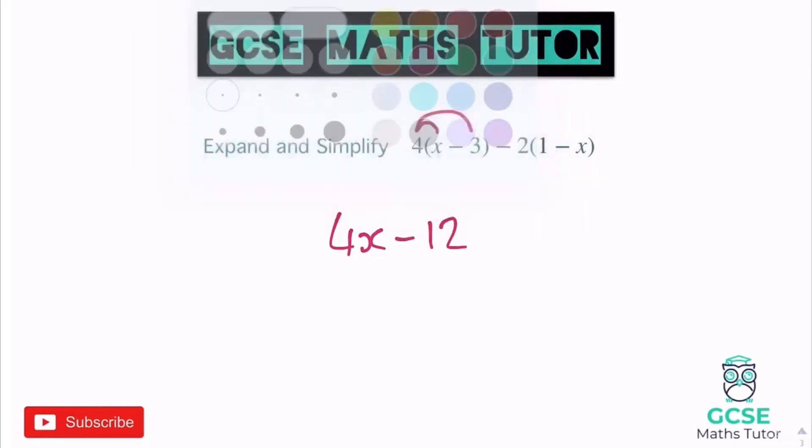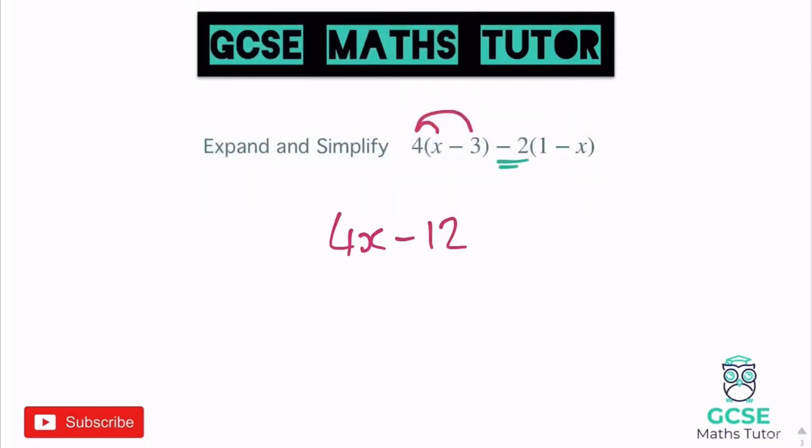Moving on to the next bracket but again just being careful because we've got a negative two at the start. This time it's negative two times the number first. Negative two times one is negative two so take away two. And then we've got negative two multiplied by negative x. So the negatives are going to become positives because we've got a negative multiplied by another negative. So we've definitely got positive. And that's two times the x. So plus 2x. Negative two times negative x is positive 2x.